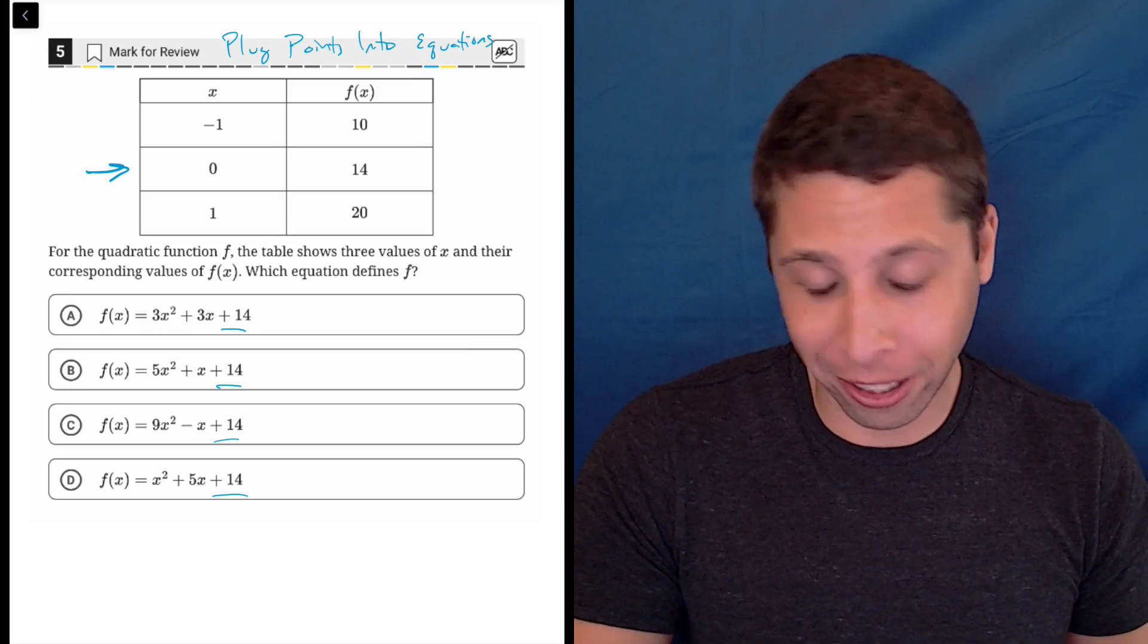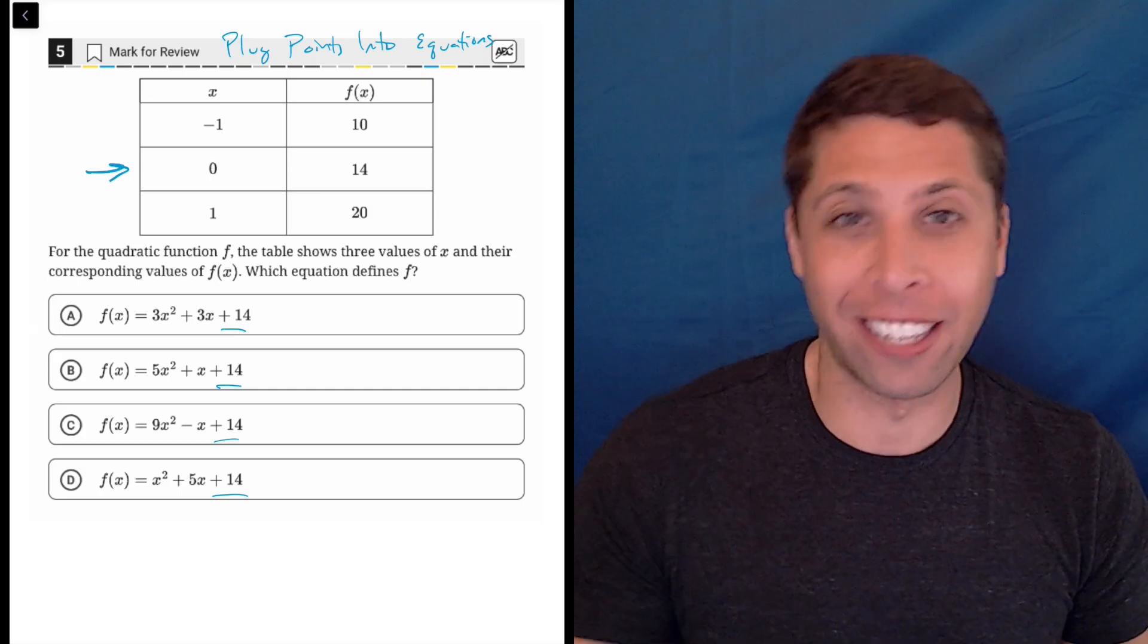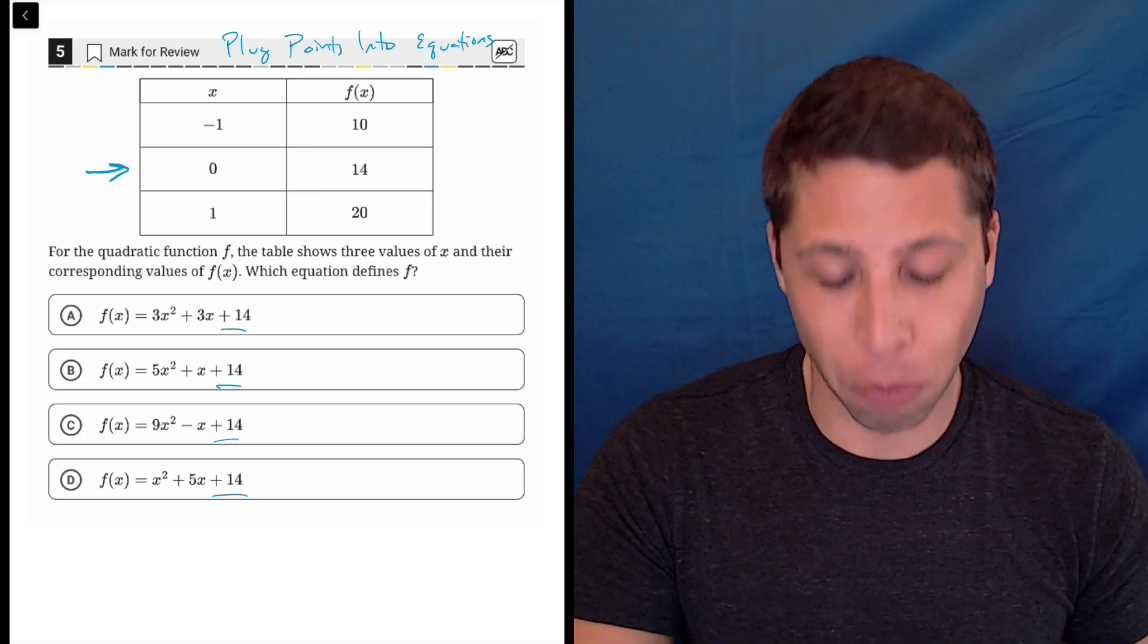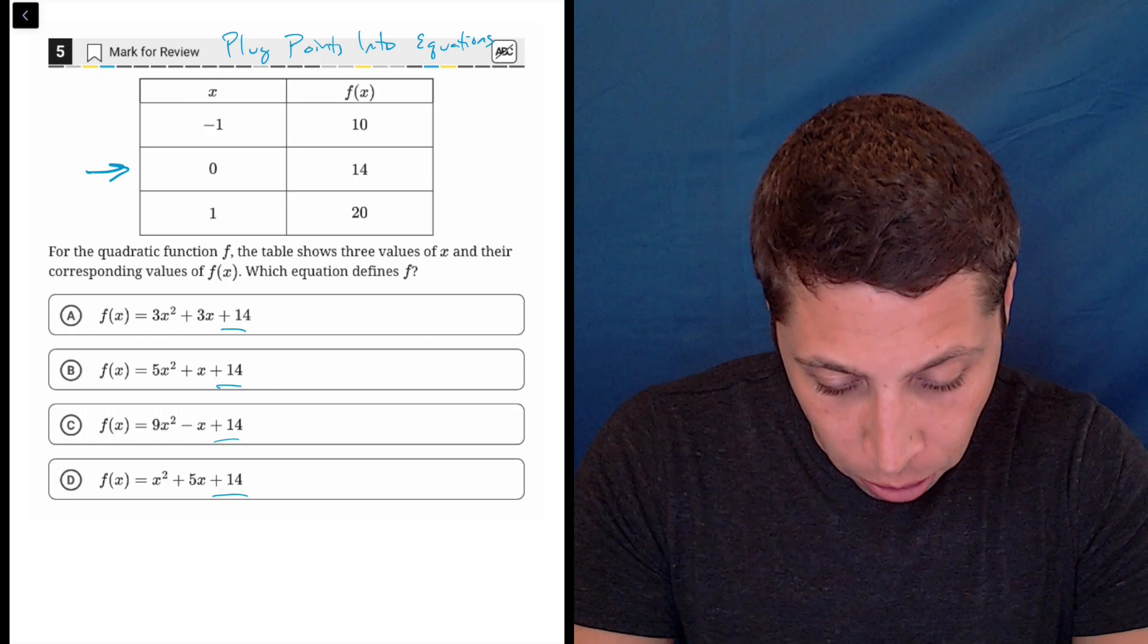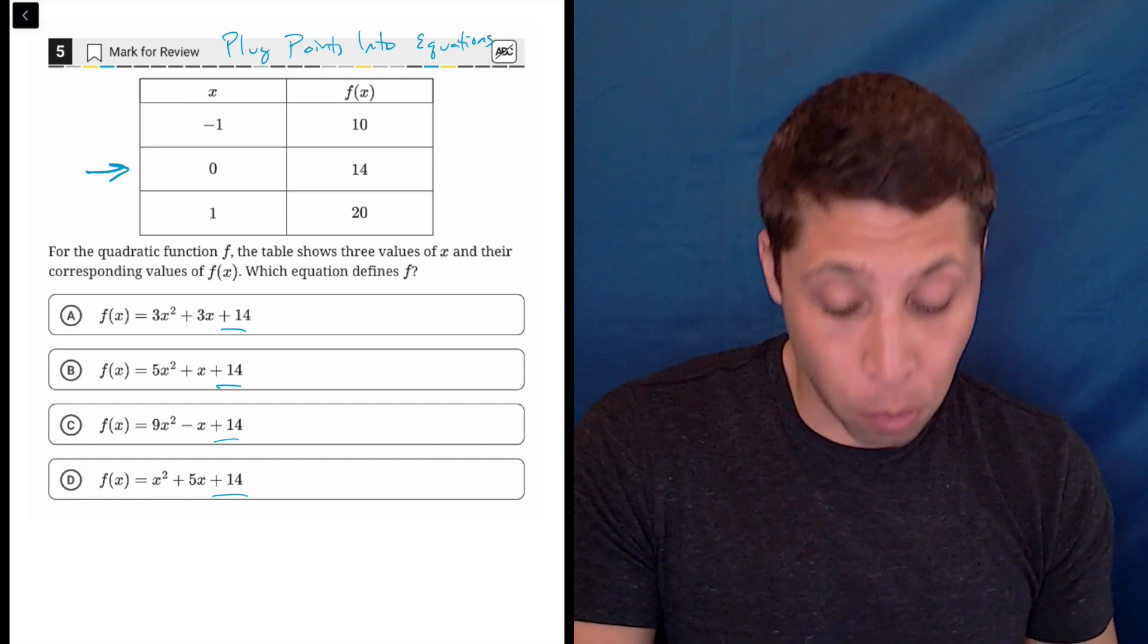So I would have still tried it, looked at it first, but it doesn't eliminate anything because every single one of these equations has a y-intercept of 14. So we got to move on. Let's go to another point. What's the next laziest point?